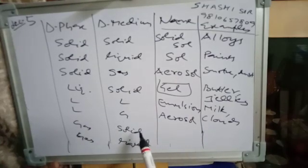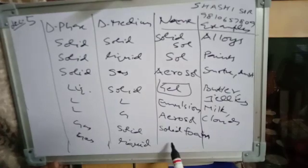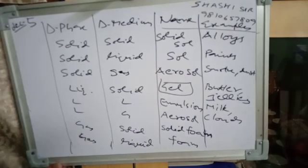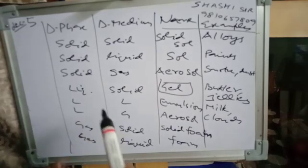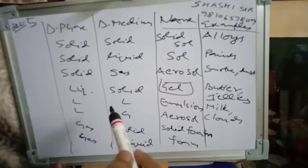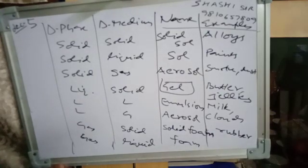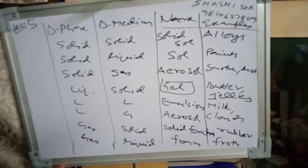Gas in solid is called solid foam. Gas in liquid is called foam or froth. These are 8 types of colloidal sols. In the exam, you may be asked to identify what the disperse phase and disperse medium are — for example, in paints, disperse phase is solid and disperse medium is liquid.